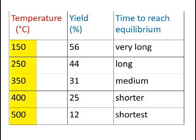And what we see is that as the temperature increases, the yield of ammonia decreases, although the time taken to reach equilibrium gets shorter as the temperature is hotter.